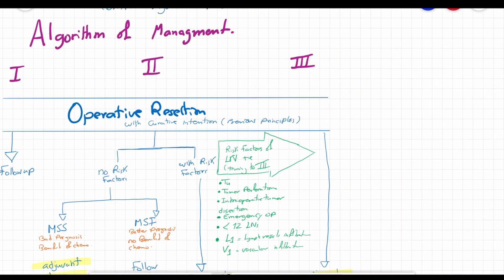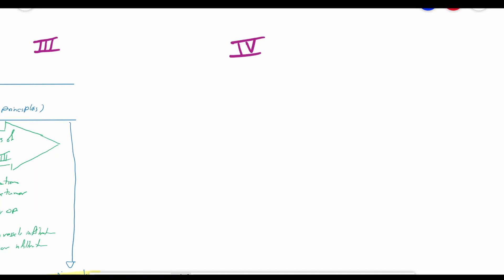Regarding stage 4, which includes distant metastases, here we must differentiate between stage 4 with resectable metastases of lung or liver, and primary irresectable metastases, as well as metastases elsewhere, like peritoneal metastases, which is stage 4c.